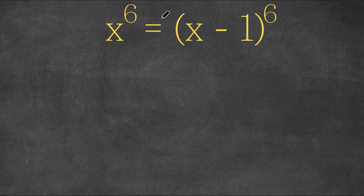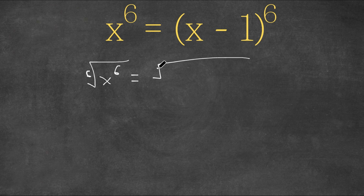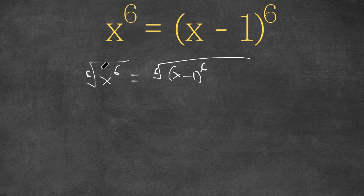So x to the power of 6 — we're going to take the sixth root of x to the power of 6, and this equals the sixth root of x minus 1 to the power of 6. These two actually cancel out, because x to the power of 6 taken to the sixth root — these two are opposites, so opposites cancel out. This simply results in x equals...